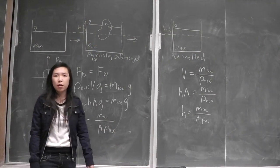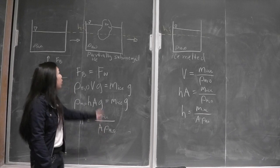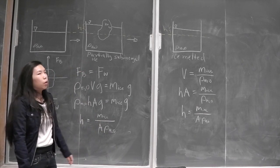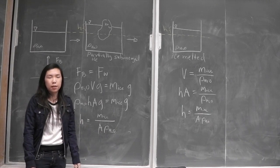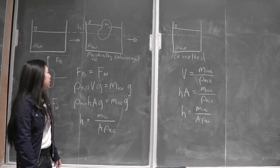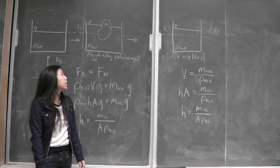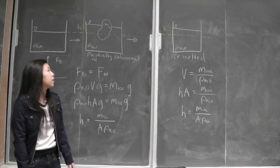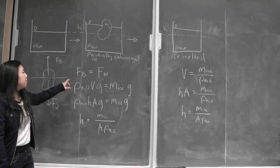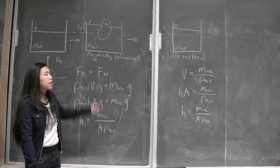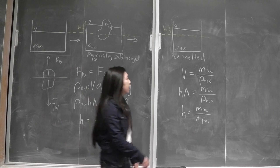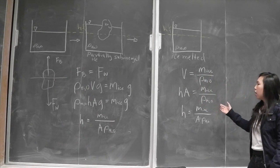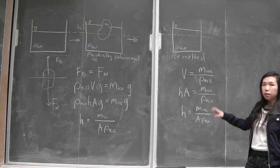So in order to solve the problem of how the water level will change due to the partially submerged ice melting, we have to look at the problem in two steps. First, we'll use Archimedes' principle, which states that the buoyant force of the ice is equal to the weight of the water displaced, and from that we can solve for the height due to the partially submerged ice. And secondly, we'll look at the instance where the ice has already melted, and from that we can solve for the height due to the melted ice.